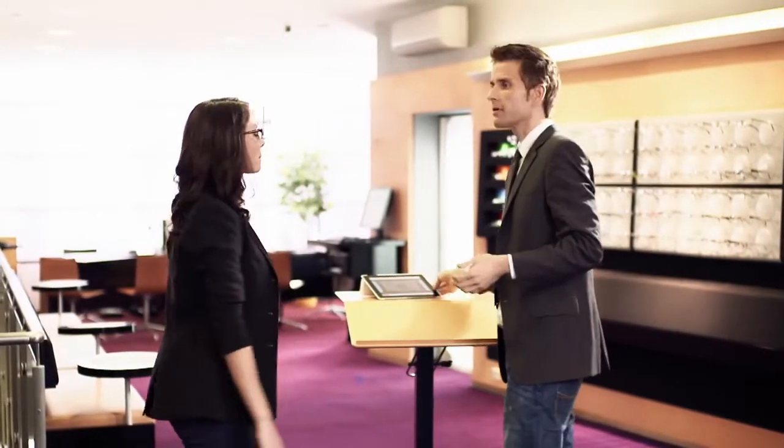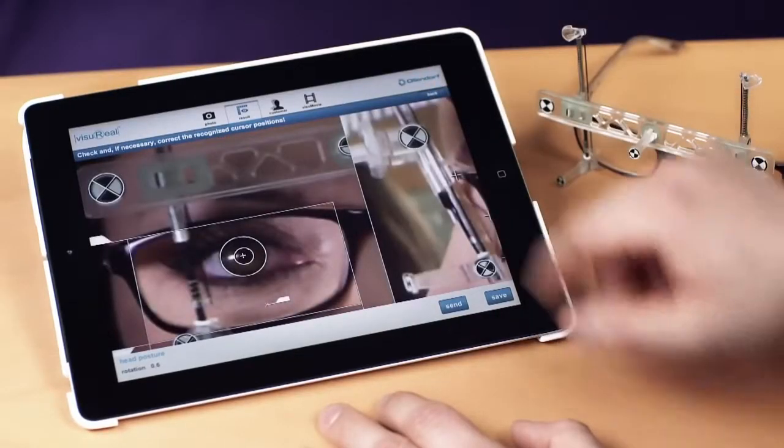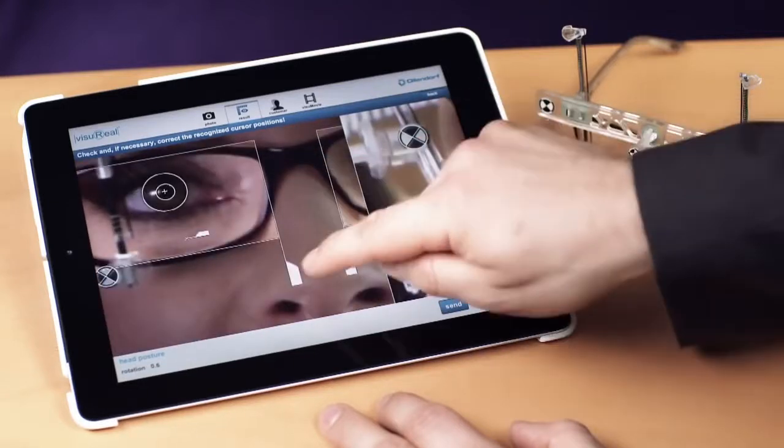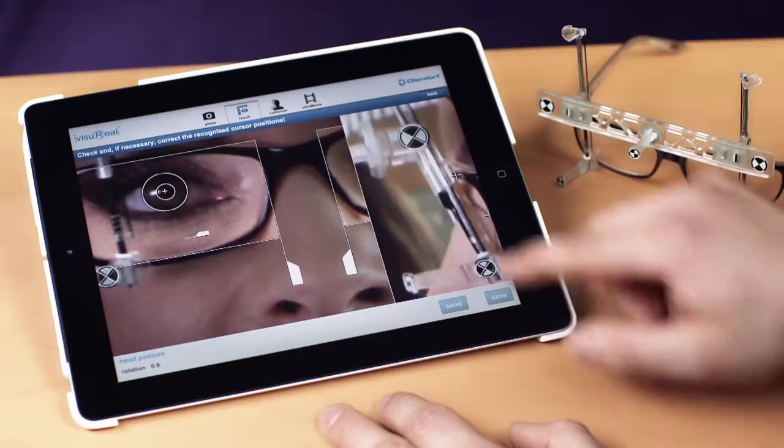When you receive the first measurement results, check if all automatically detected measuring cursors are properly positioned. If not, activate the zoom mode and move the cursors.